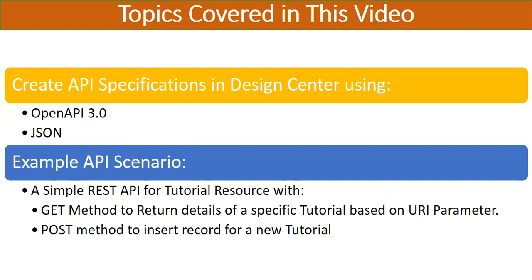Let's look at the details of the topics that are going to be covered in this video tutorial. We are going to see how we can use the power of AnyPoint Platform Design Center to create API specifications using OpenAPI 3.0, creating JSON-based specifications. Support for OpenAPI 3.0 has recently been introduced in MuleSoft. We have two options — JSON-based or YAML-based specifications. In another video I've already covered RAML-based API specifications; I'll put the link in the suggestion box and comments.